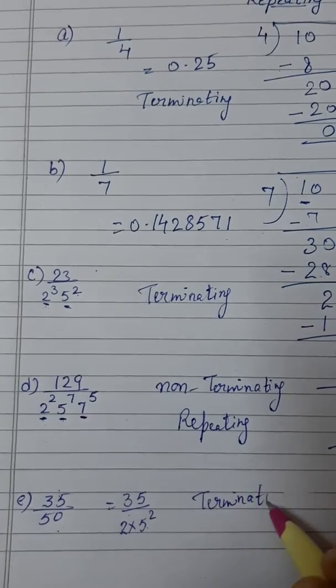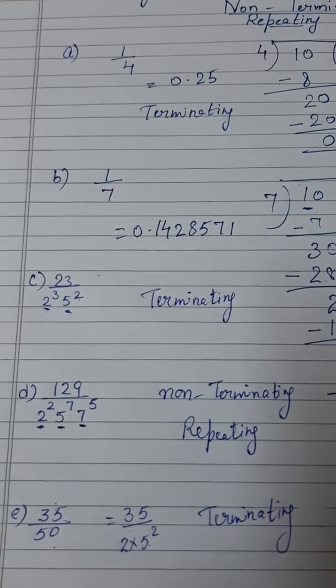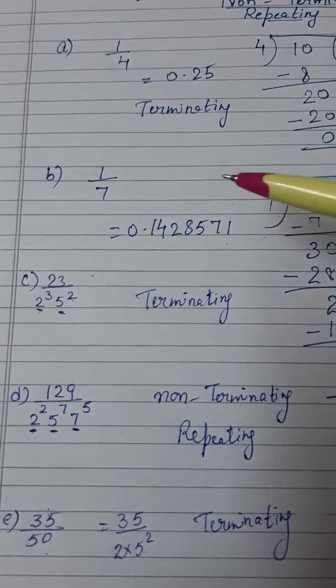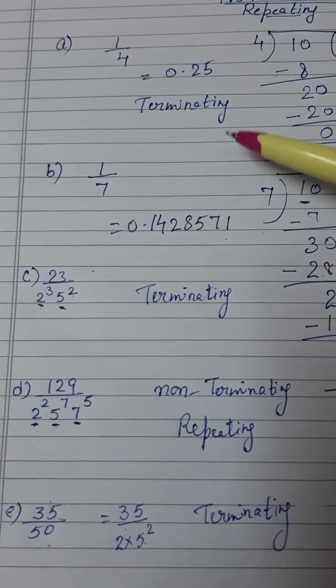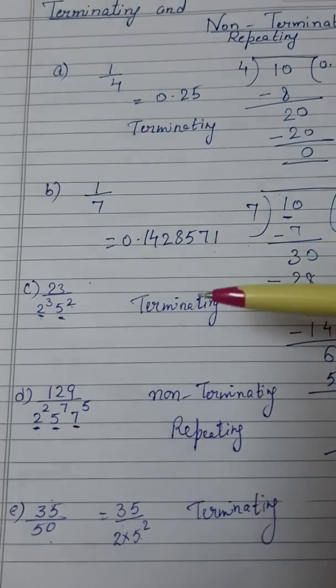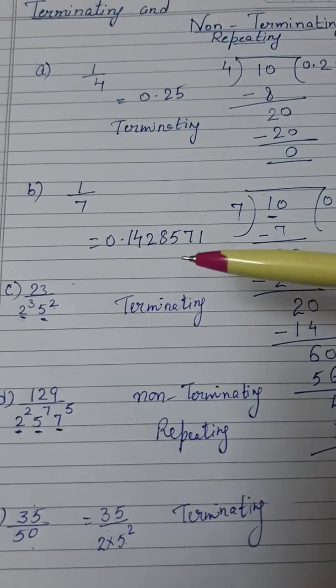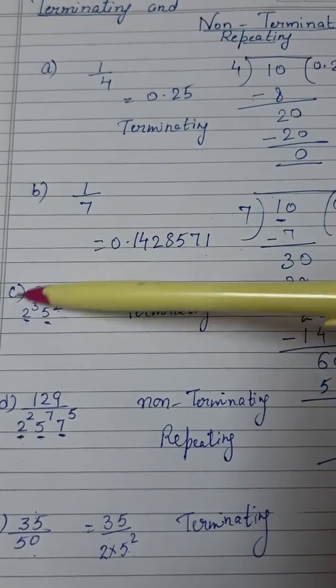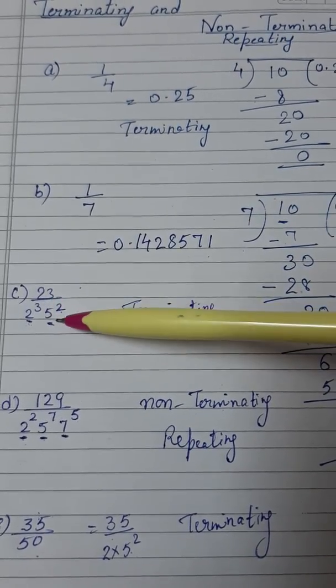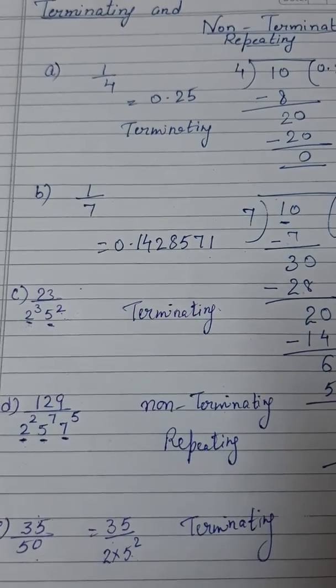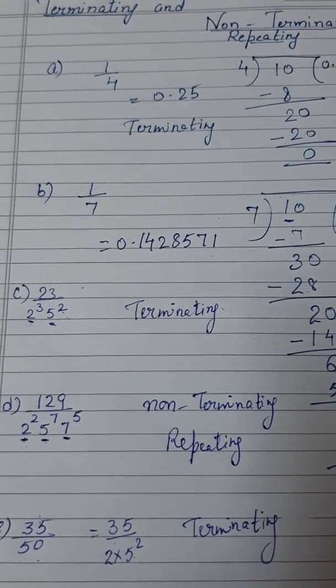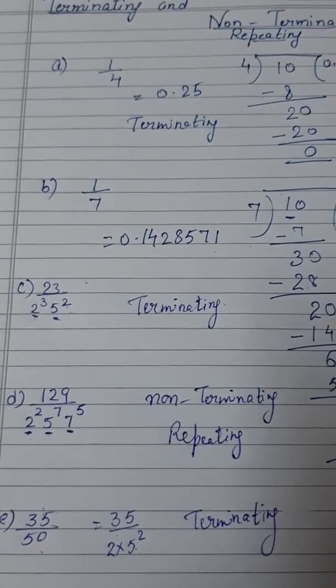So without doing actual division we can know if the rational numbers are having terminating decimal expansion or non-terminating decimal expansion by just looking at the denominator. If the denominator is in the powers of 2 and 5 only, then it can be terminating, otherwise it will be non-terminating repeating. Thank you so much. If you have not subscribed to my channel please subscribe it. Thank you.